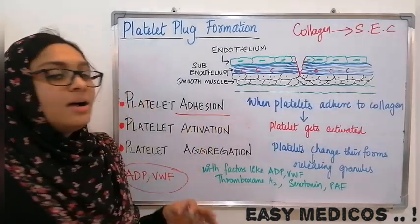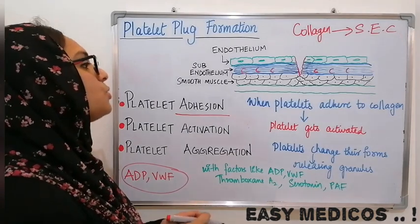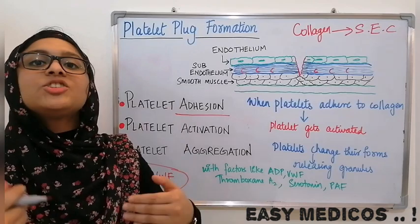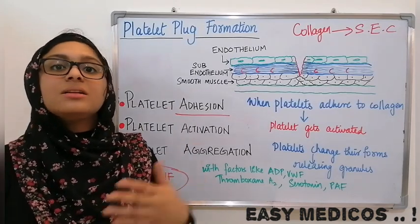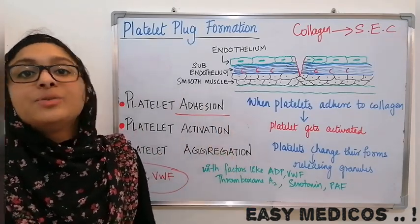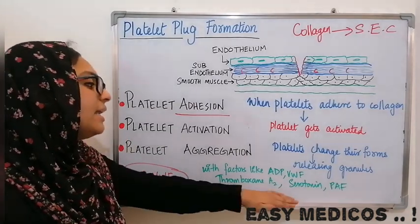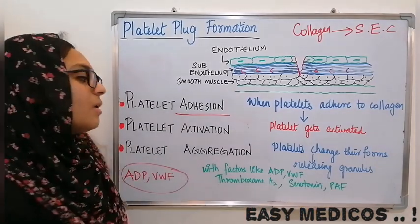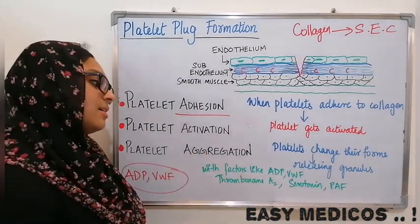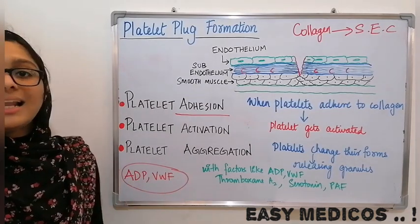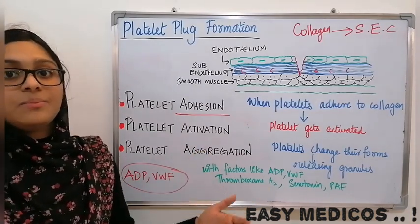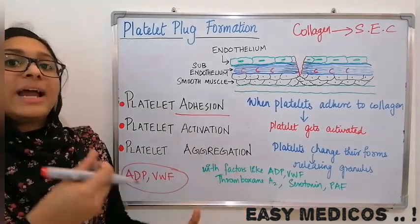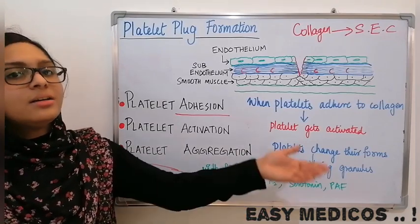From adhesion we move to activation. When the platelets adhere to the collagen, the platelet gets activated. Upon this activation, it changes its form — it can swell, contract, and then release granules with certain factors like ADP, VWF, thromboxane, serotonin, PAF, etc. ADP and VWF will help the nearby platelets to adhere, activating more and more platelets, releasing more ADP and VWF and other chemicals.